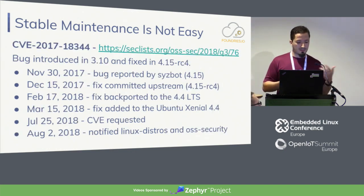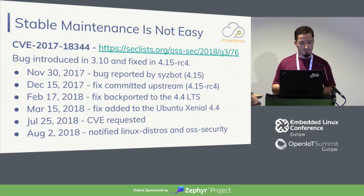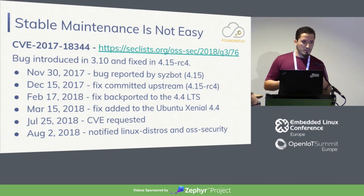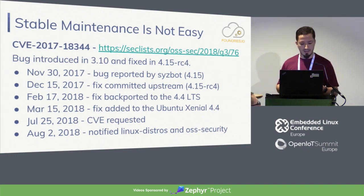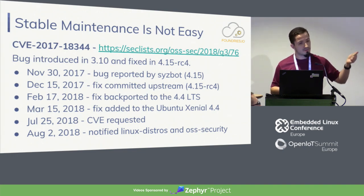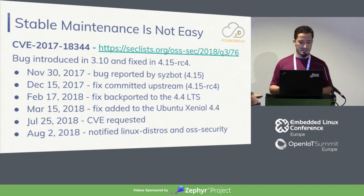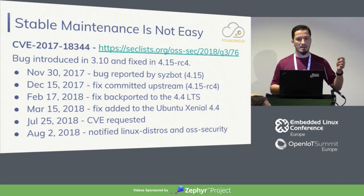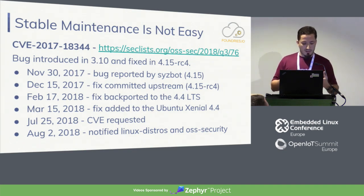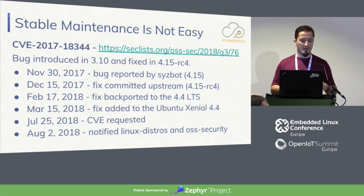Just to give some examples of how complicated it is — here's one CVE that was opened this year. The issue was introduced in 3.10. The bug was reported and fixed upstream, landing in December 2015. It was fixed in 4.4 LTS and Ubuntu got that, but not every distro got that fix in particular. The CVE was only requested and published a long time after the bug was originally identified. The main list where most distros get notifications — Linux Distros and OS security — only got notified in August. So, for example, CentOS was vulnerable up to that point. Even if you're staying with the latest, depending on how you manage and identify fixes that should be brought in, there's still a big window where you might be vulnerable, even if you're tracking all CVEs.